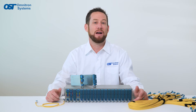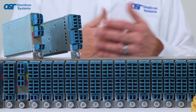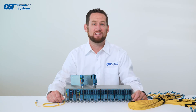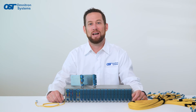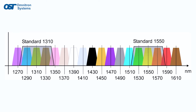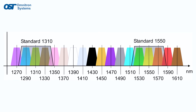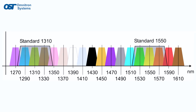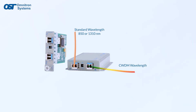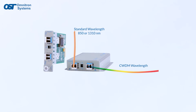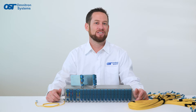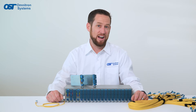So how do you use a CWDM multiplexer? First, you need to make sure that all your devices are compatible with CWDM technology — they need to be able to transmit and receive data at the specific wavelengths that the multiplexer uses. To elaborate on wavelengths, they're broken down into very specific increments of 20 nanometers. Here's a chart to help visualize all the various CWDM wavelengths. In addition to CWDM multiplexers, Omnitron also makes fiber-to-fiber media converters or transponders that convert standard wavelengths into CWDM wavelengths.